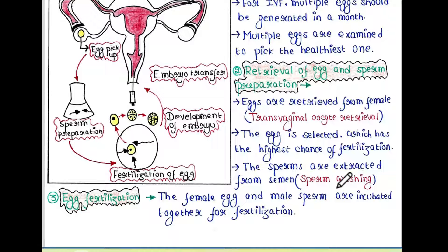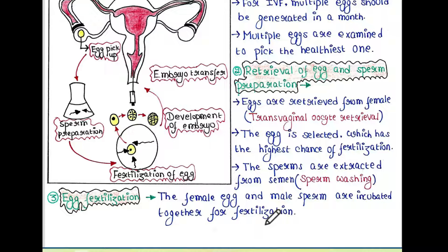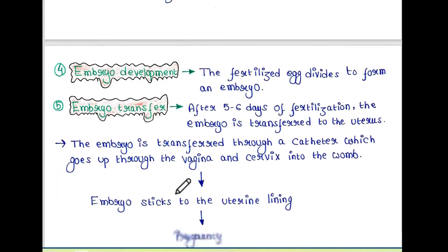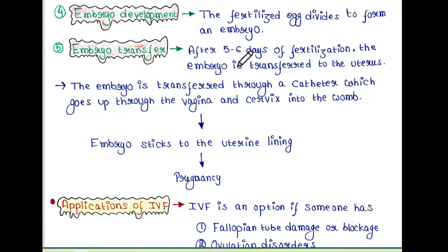Sperms are extracted from semen through a process called sperm washing, where the sperms are prepared. Then, for egg fertilization, the female egg and the male sperm are incubated together, and a zygote is formed.